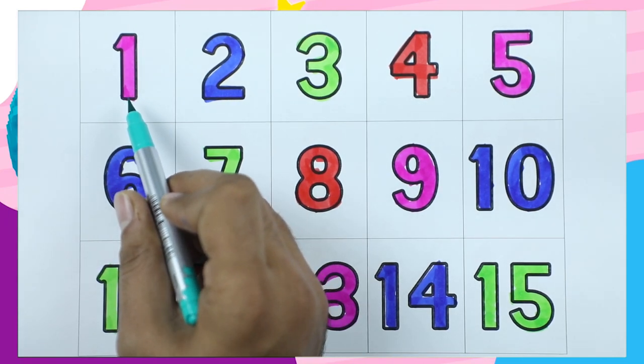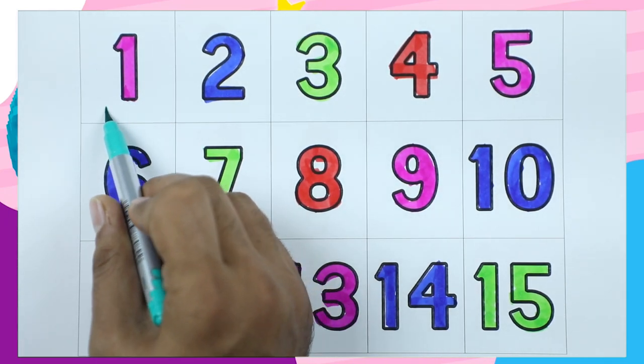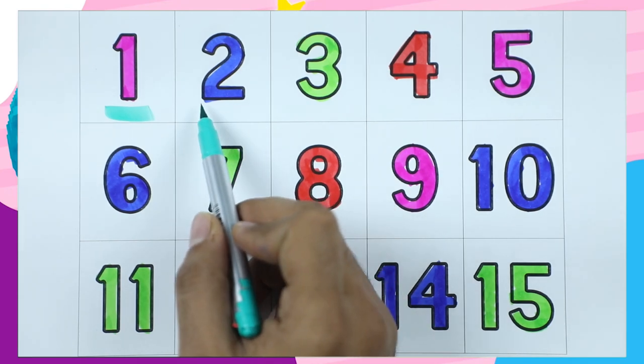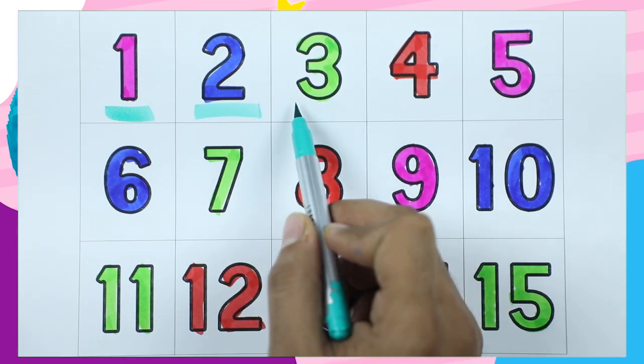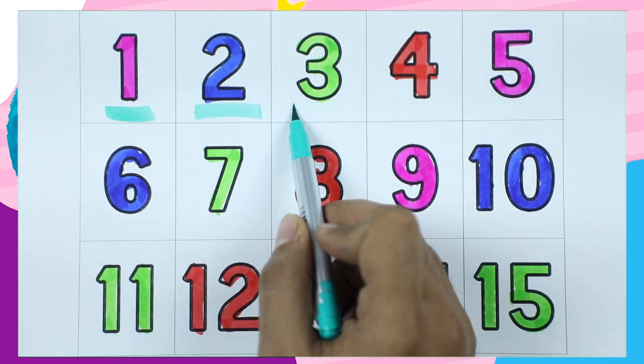Which number? Tell me. Yes, it's one with pink color. Number two, which color? Number two, blue color. Number three with green color.